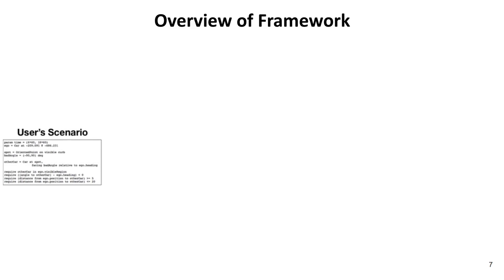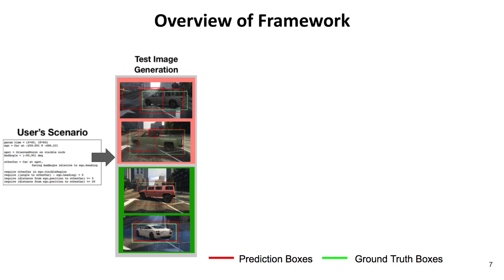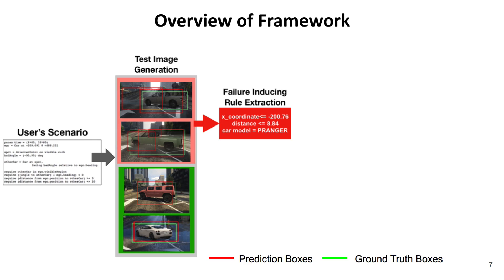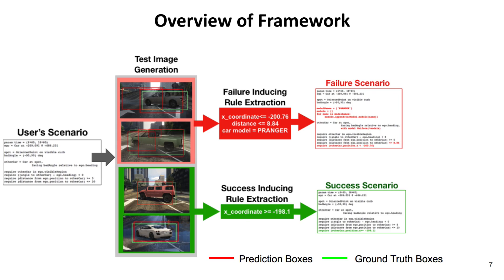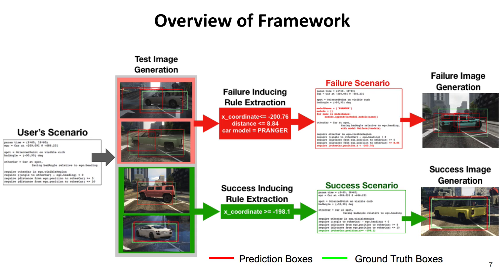Our approach is the following. Given a pre-trained object detector, we let a user provide us with a scenario of interest coded in Scenic. Our objective is to find the subset of the scenario's set of scenes on which the detector consistently succeeds or fails to detect vehicles. We generate a large number of images from the user's scenario, analyze the detector's performance on those images, and extract failure-inducing rules. Then we incorporate those rules into the user's Scenic program to output the failure scenario, and likewise for the success scenario. These scenarios not only serve as descriptions of success and failure scenarios, but also as means to systematically generate image data that are likely to induce particular behavior from the detector. These data can be used to debug, explain, or retrain the network.